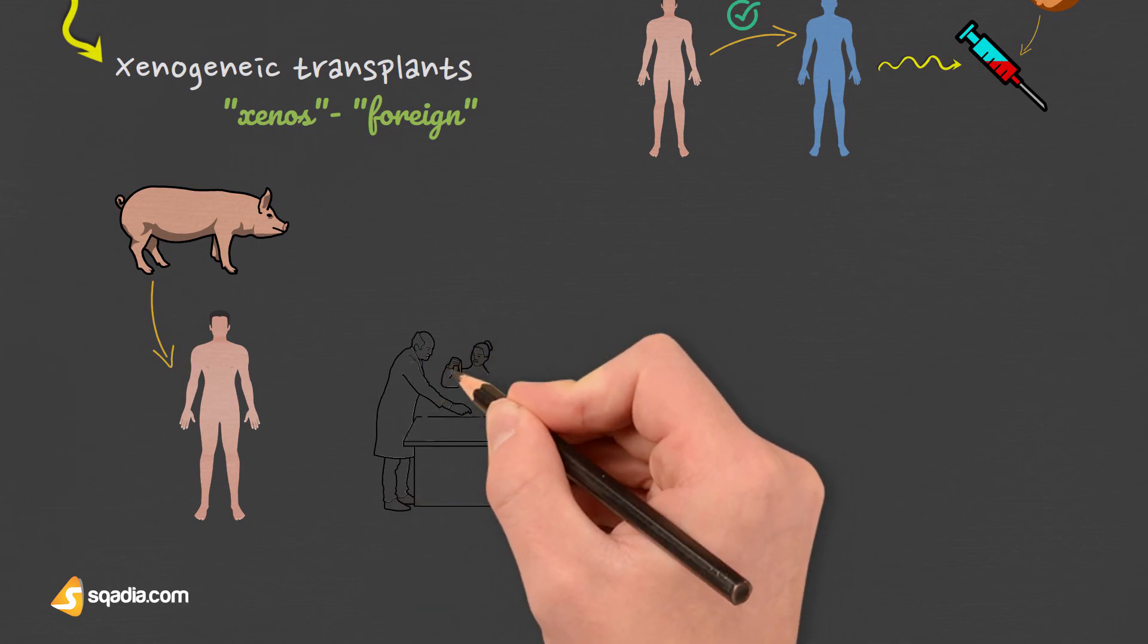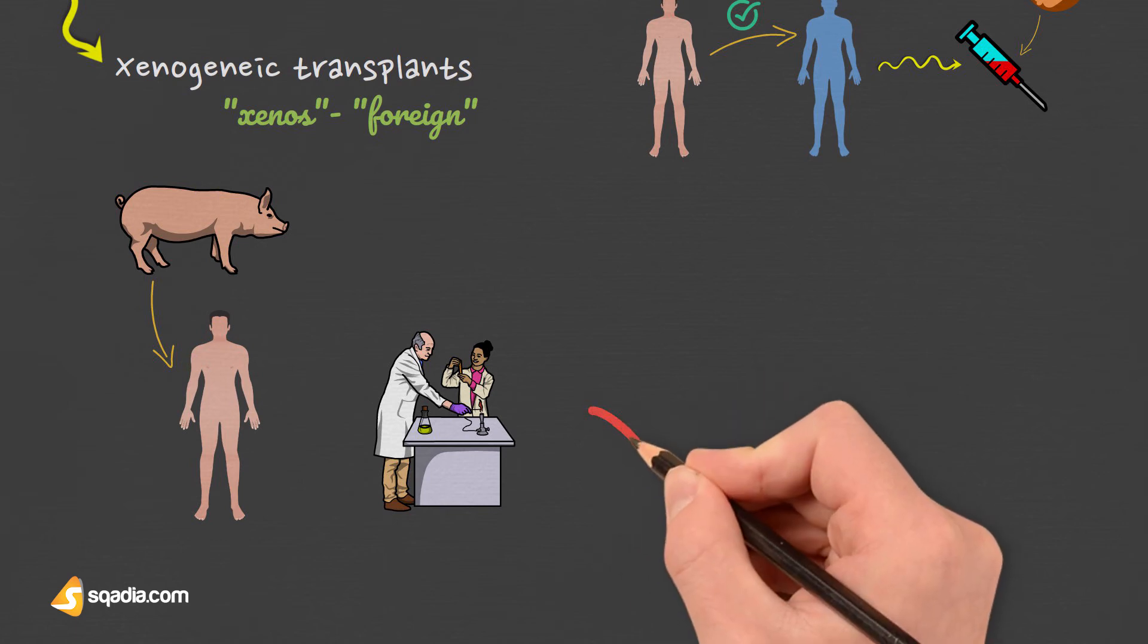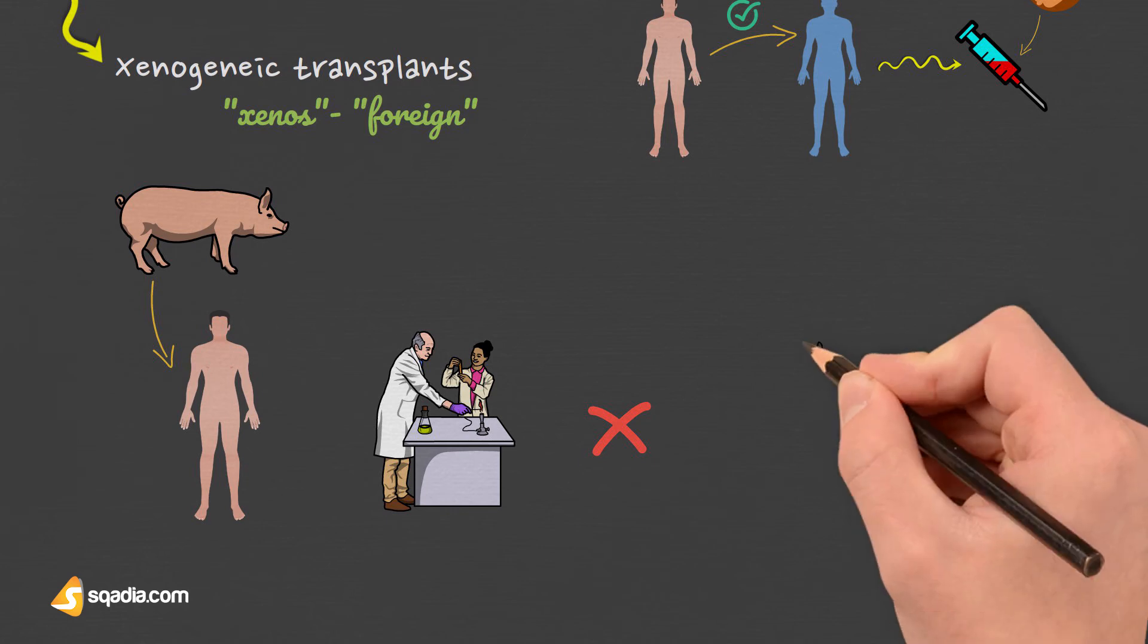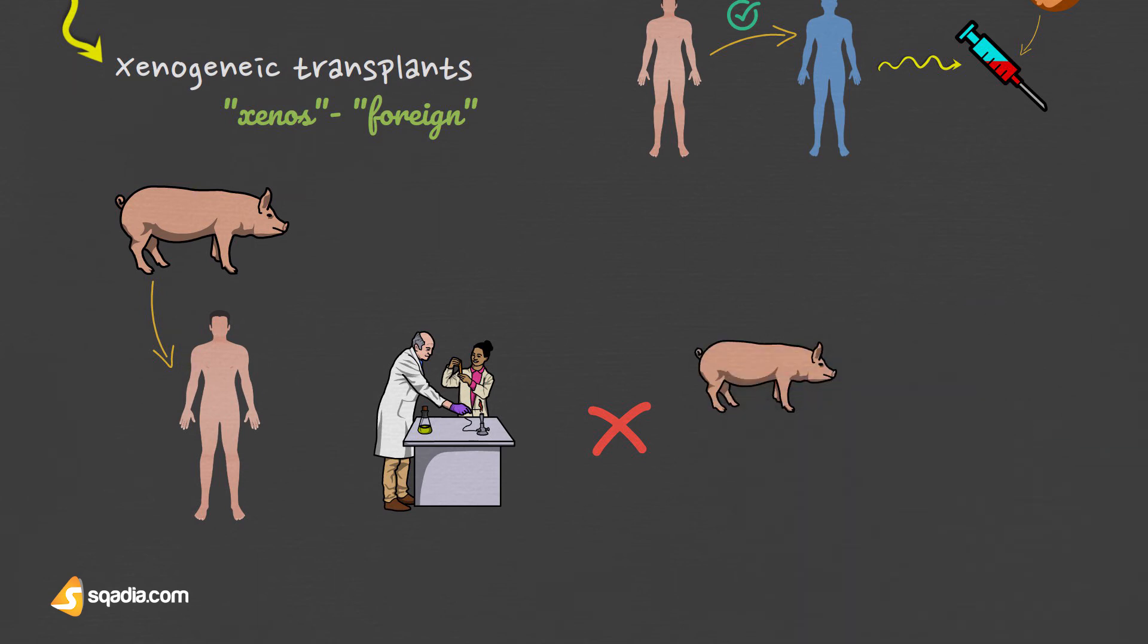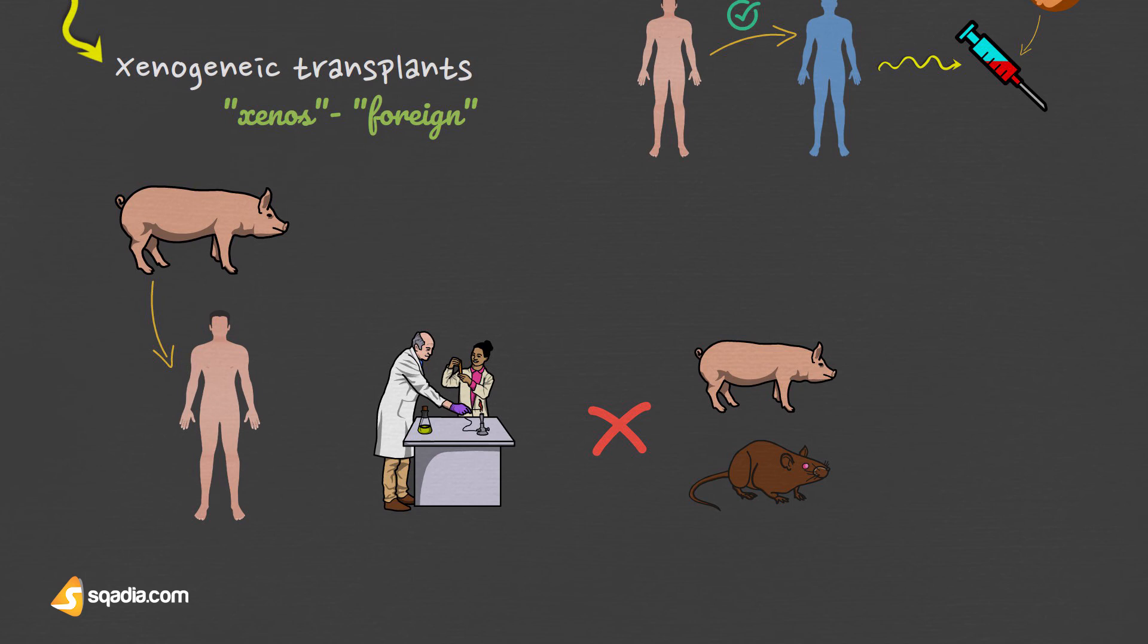The potentials of xenotransplantation have been intensively researched, but immediate rejection due to preformed antibodies and complement is a huge hurdle. In order to prevent hyperacute rejections, researchers are attempting to produce transgenic pigs. The xenotransplantation of human tumor cells into immunocompromised mice is a research technique frequently used in pre-clinical oncology research.